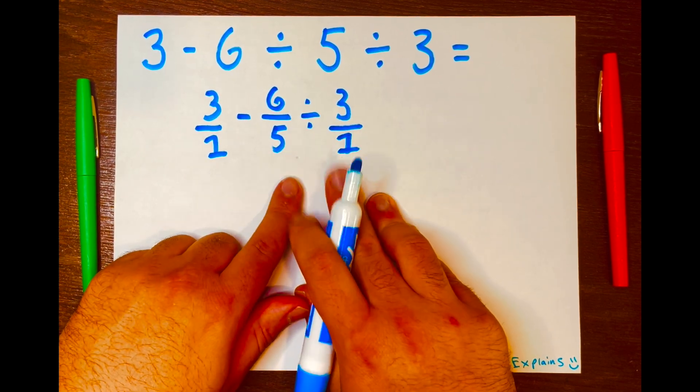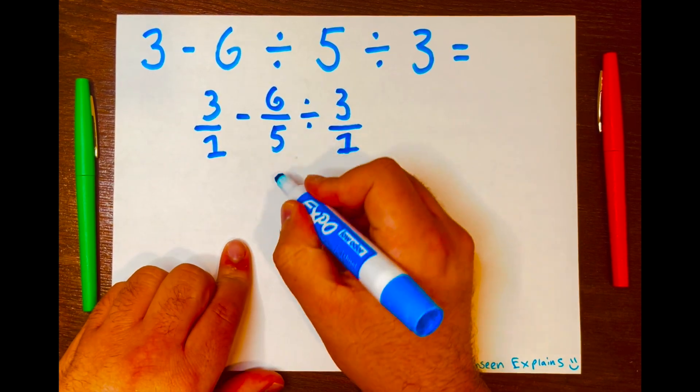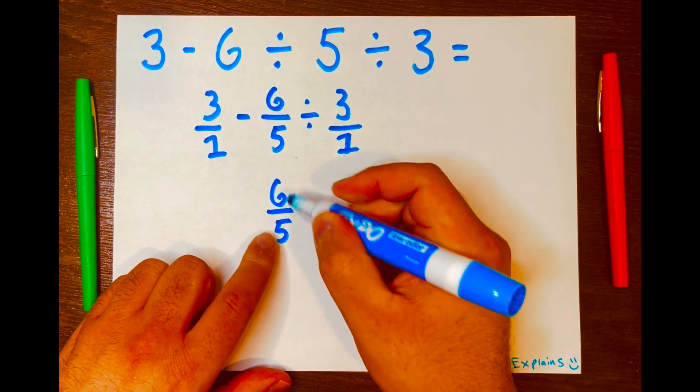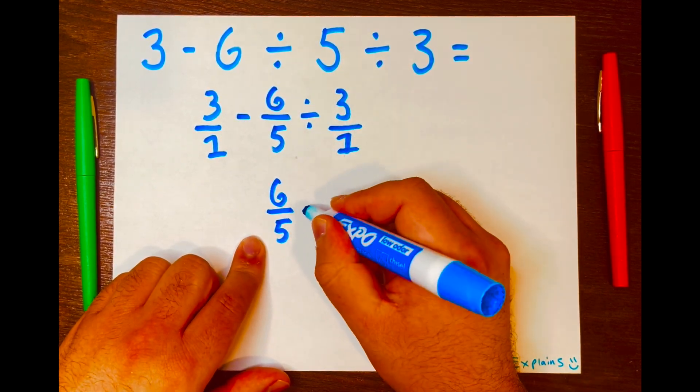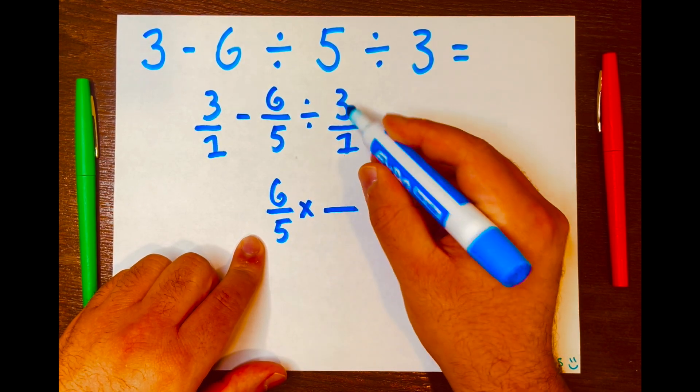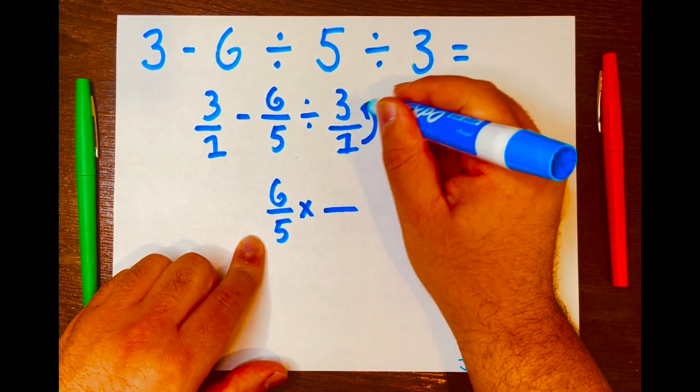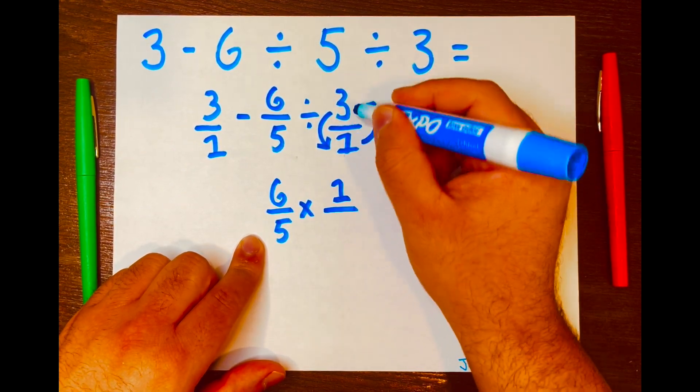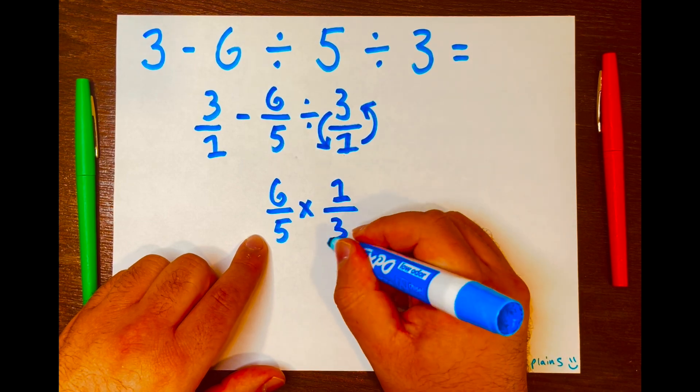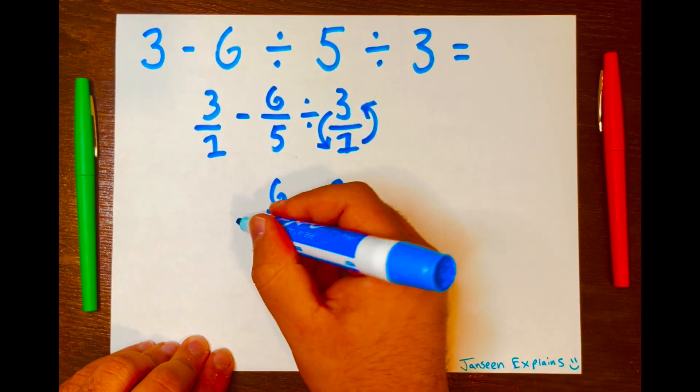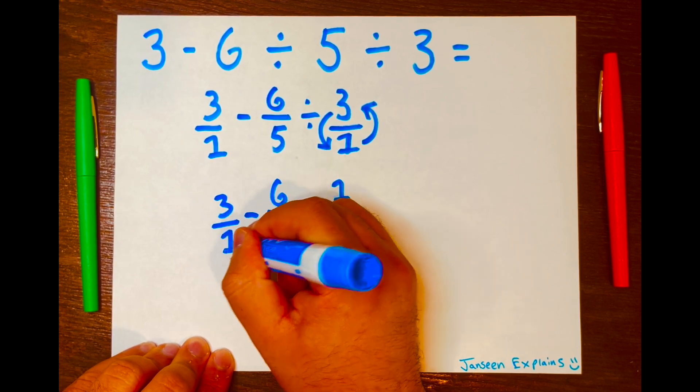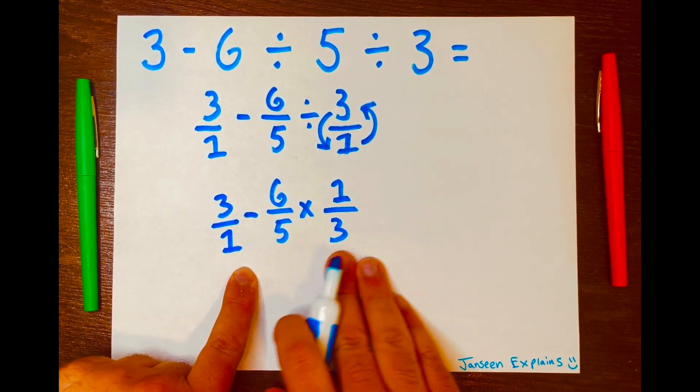We're going to use the keep change flip method where we keep the first fraction, change the division symbol to multiplication, and then flip the second fraction. So the 1 will go on top of the fraction and the 3 will go at the bottom of the fraction. Then I'll bring down the 3 over 1 minus. And now we have this problem.